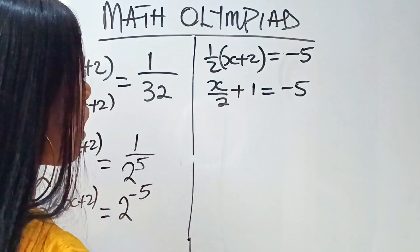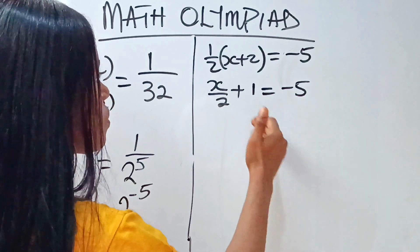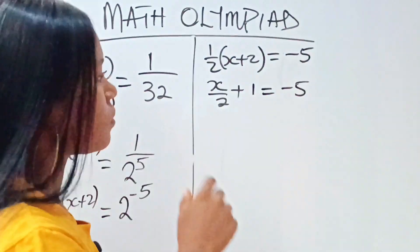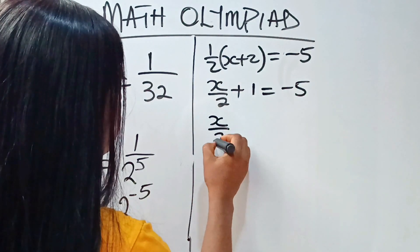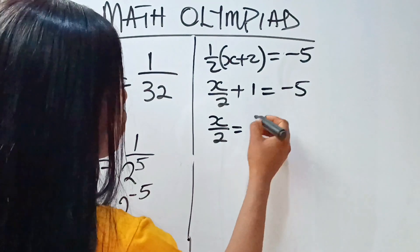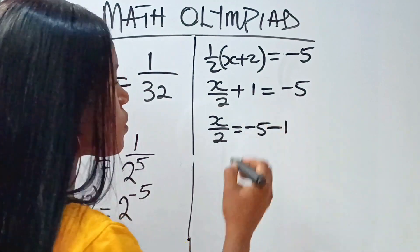Now, let's transfer this one to the other side of the equation. So let's subtract one from both sides of the equation. Then we'll have that x over 2 is equal to minus 5 minus 1.